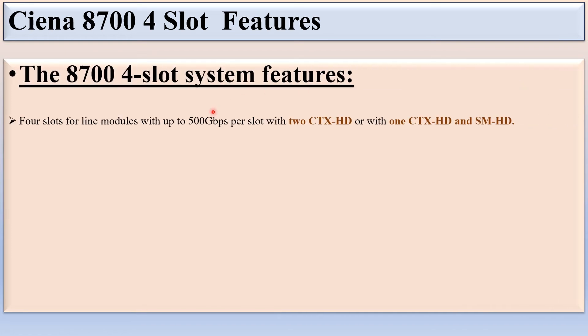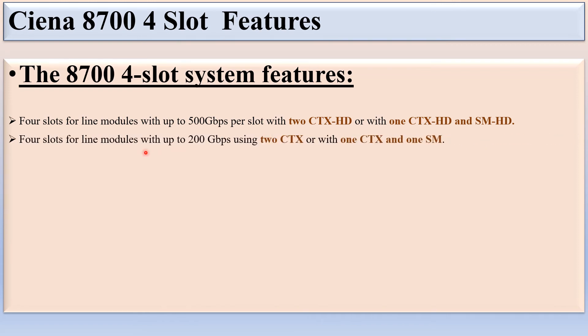Now we will discuss the CNI 8700 4-slot features. There are 4 slots for line modules with up to 500 Gbps per slot using 2x CTX-HD, or 1x CTX-HD and 1x SM-HD. Alternatively, there are 4 slots for line modules with up to 200 Gbps using 2x CTX, or 1x CTX and 1x SM.